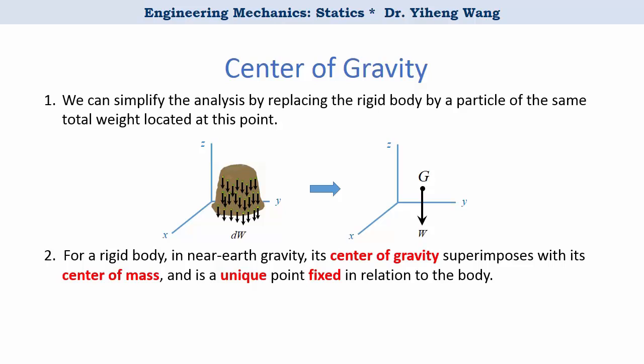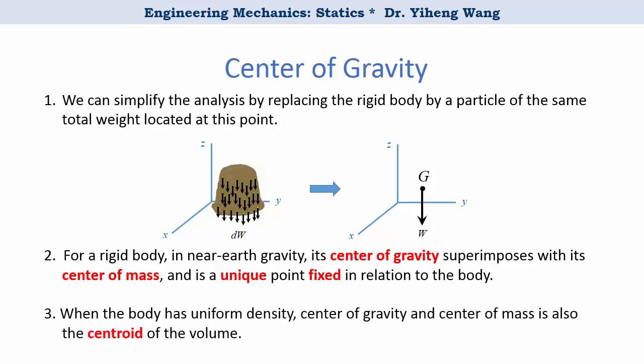Please be noted that this point could be outside of the physical body. For example, for a boomerang, you can imagine its mass center being outside of its body. Also, when a rigid body has uniform density, the center of mass — which is also the center of gravity — superimposes with the centroid, which is the geometric center of the body.